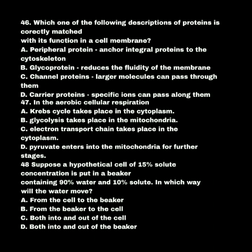Which one of the following descriptions of proteins is correctly matched with its function in the cell membrane? A. Peripheral protein anchors integral proteins to the cytoskeleton. B. Glycoprotein reduces the fluidity of the membrane. C. Channel protein — larger molecules can pass through them. D. Carrier proteins — specific ions can pass along them. Our answer is D: carrier proteins — specific ions can pass along them.